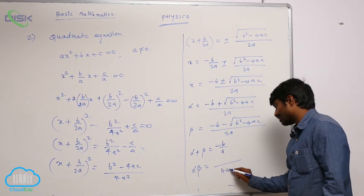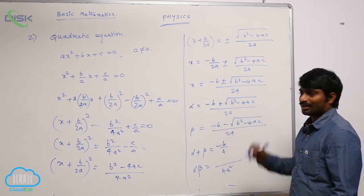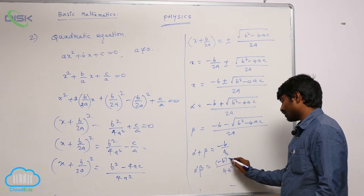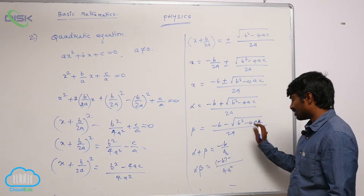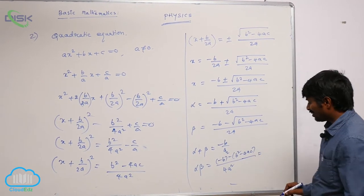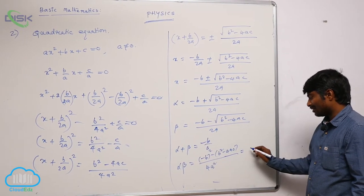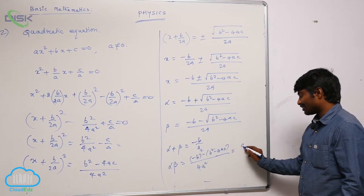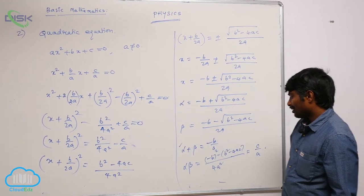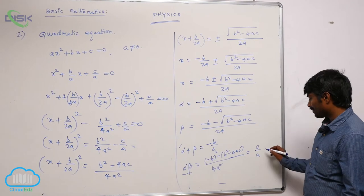For the product alpha times beta, using the identity y plus z times y minus z equals y squared minus z squared, we get B squared minus B squared minus 4AC all over 4A squared, which simplifies to 4AC by 4A squared, that is C by A. So the sum of roots equals minus B by A, and the product of roots equals C by A.